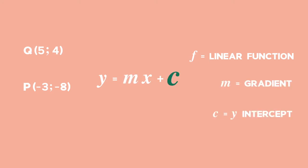In order to determine the linear function of f, we need to use the formula y equals mx plus c, in which m represents the gradient and c represents the y-intercept.